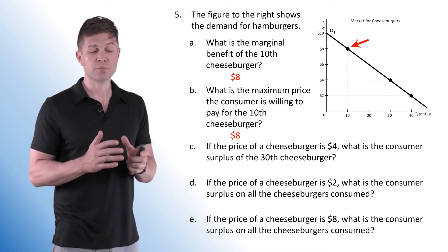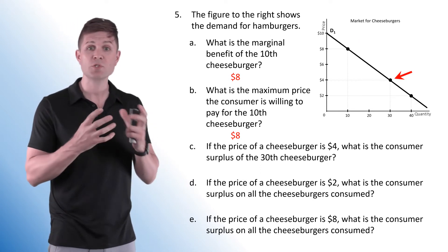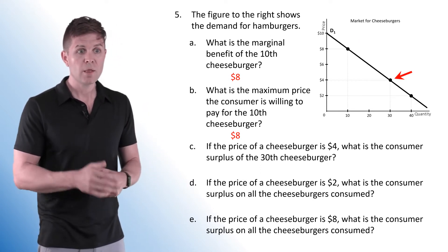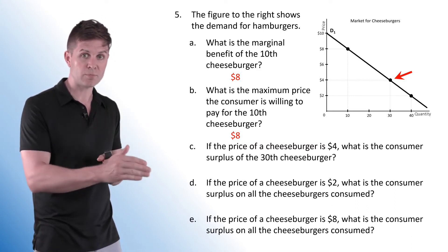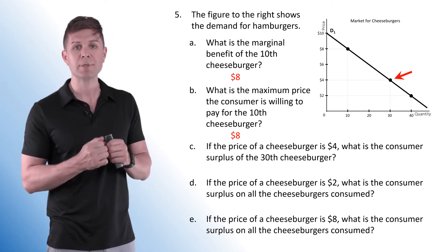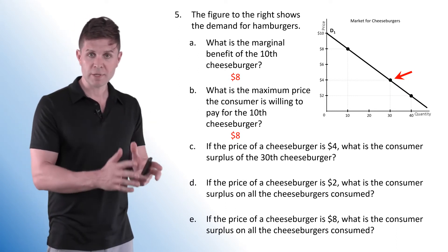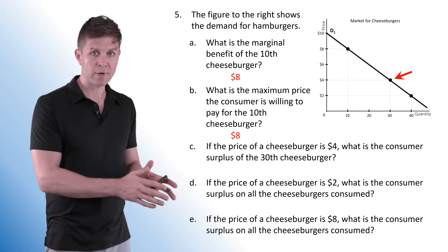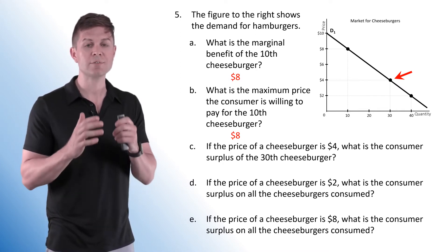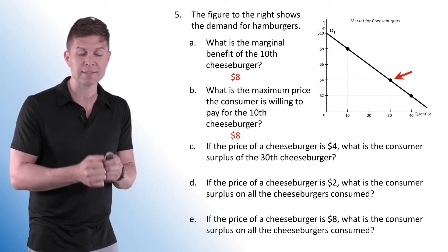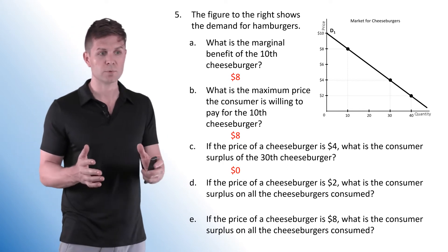If the cheeseburger is $4, what is the consumer surplus of the 30th cheeseburger? A lot of these questions just help you understand the wording. The 30th cheeseburger is purchased by the marginal consumer — as the price goes down to $4, he comes into the market because his marginal benefit is exactly $4. So the 30th cheeseburger at $4 gets zero consumer surplus. He values it at exactly $4 and is getting nothing extra.